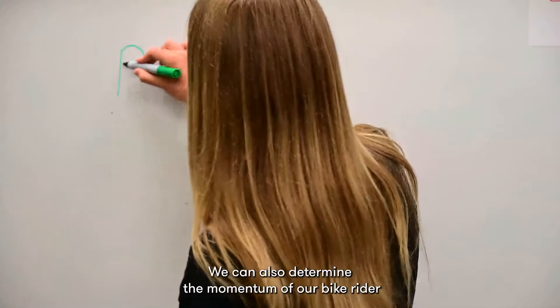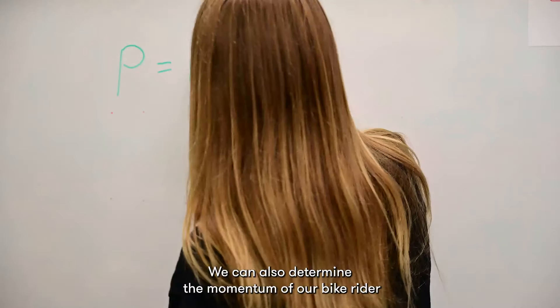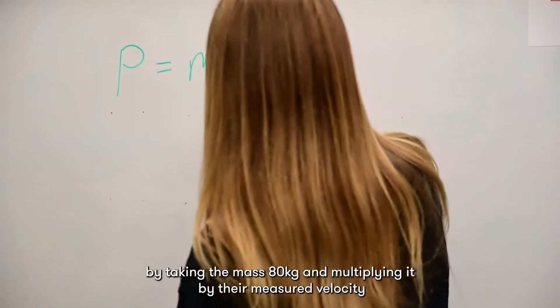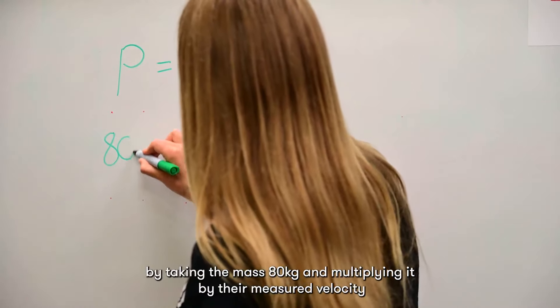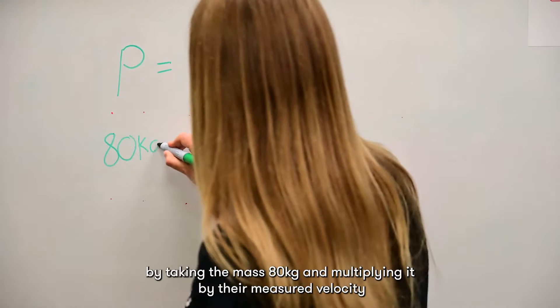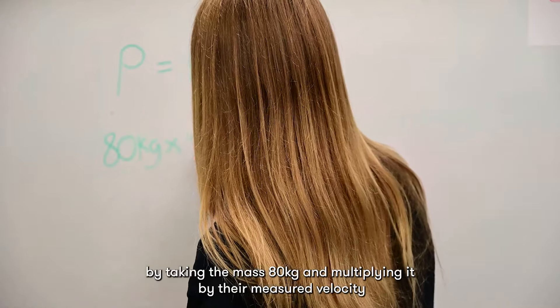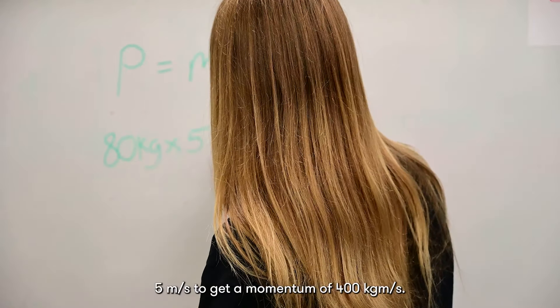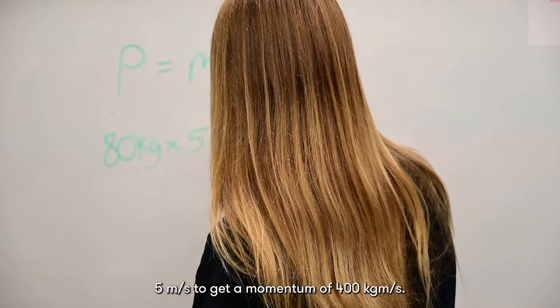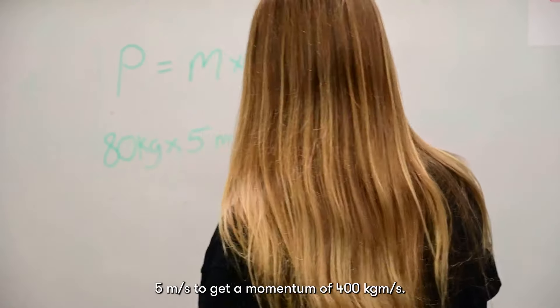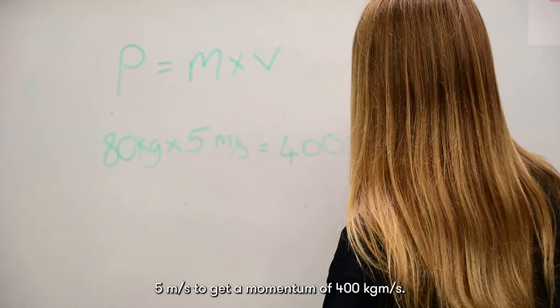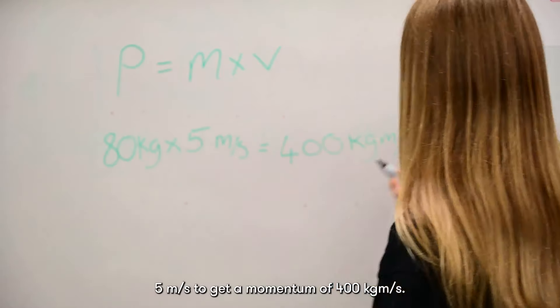We can also determine the momentum of our bike rider by taking the mass, 80 kilograms, and multiplying it by their measured velocity, 5 meters per second, to get a momentum of 400 kilogram meters per second.